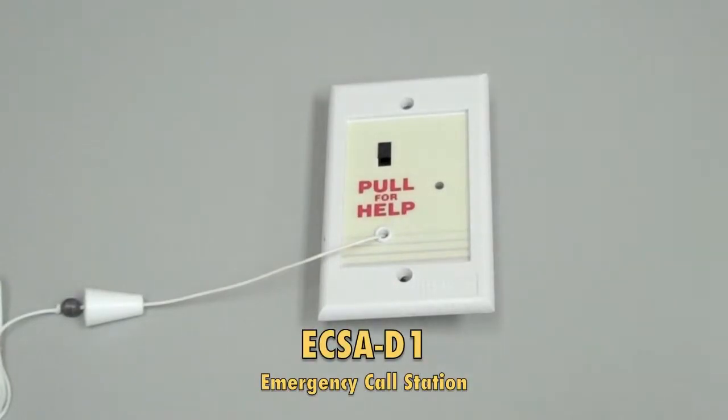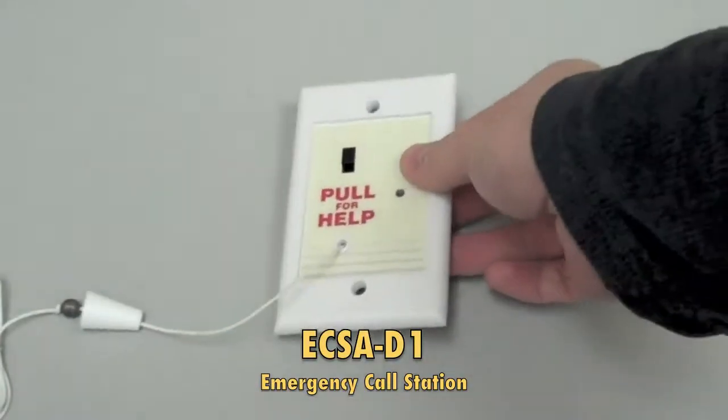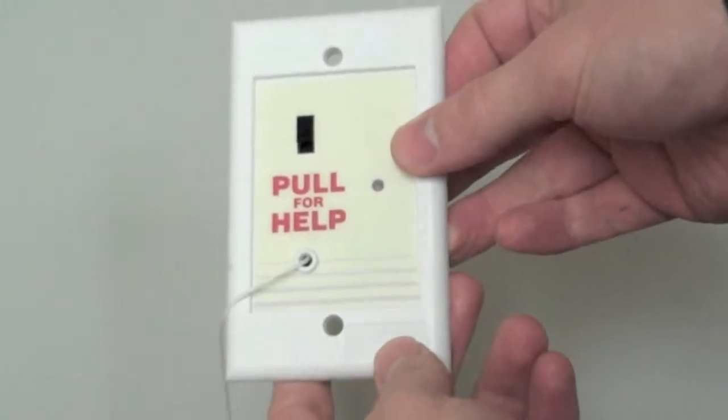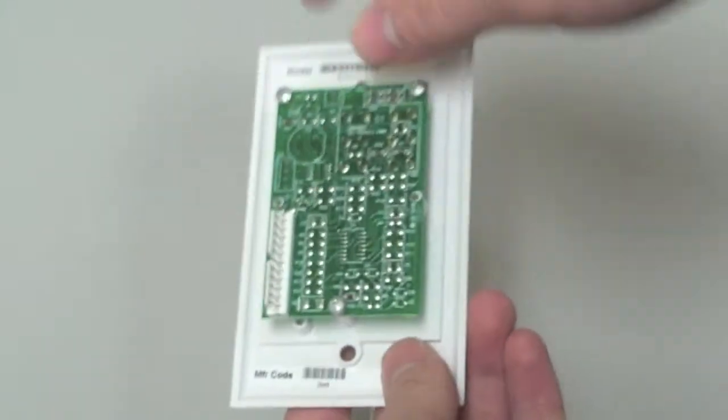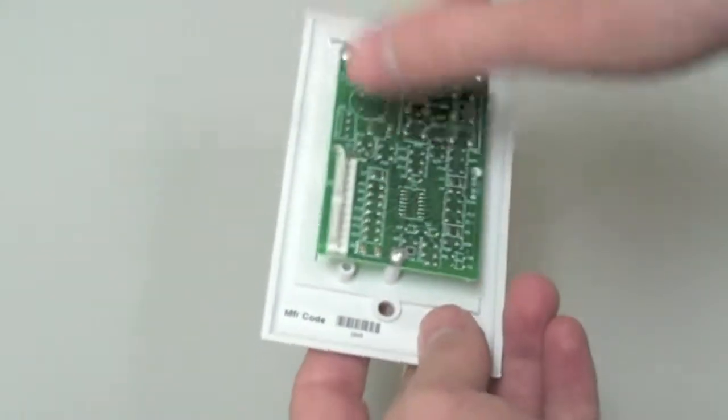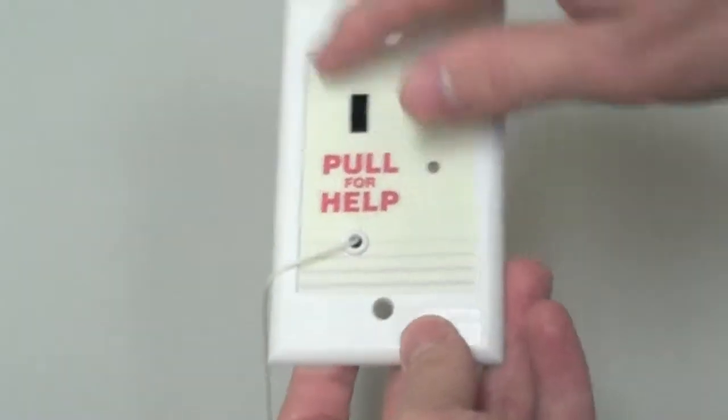Now for our pole stations. This one here is an ECSA-D1. It's your standard emergency call pole station. On the back is where the pigtail connects, right here, as you can see. The front just a standard pole core with a pole switch.